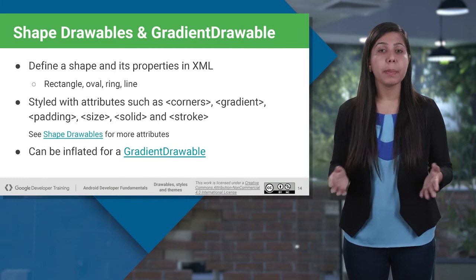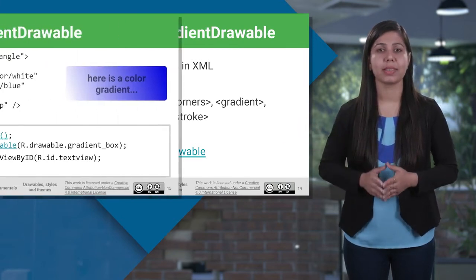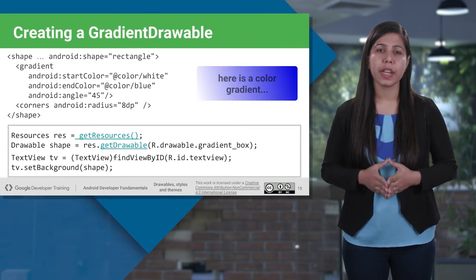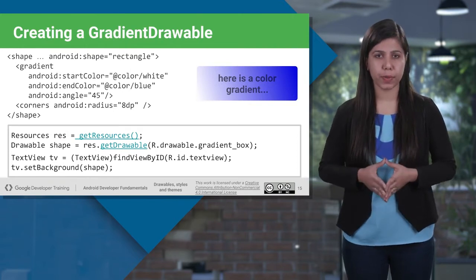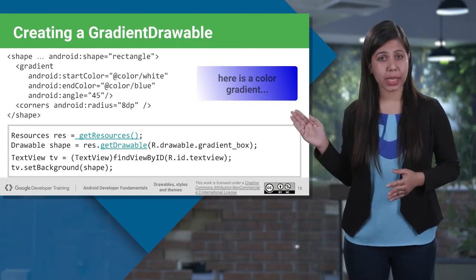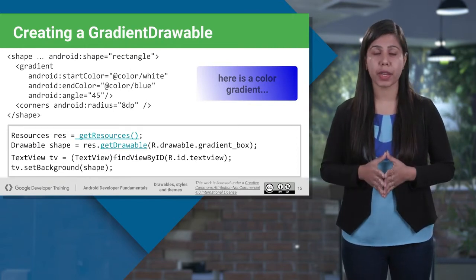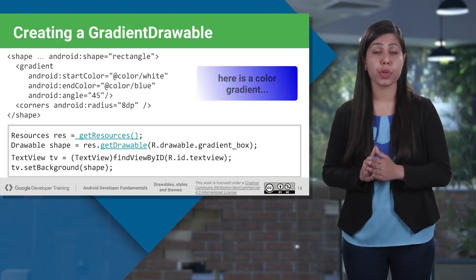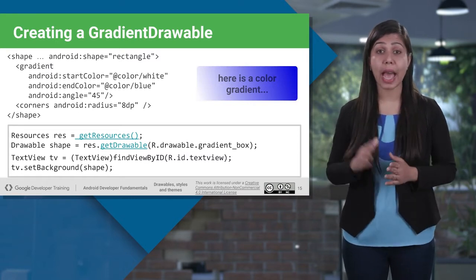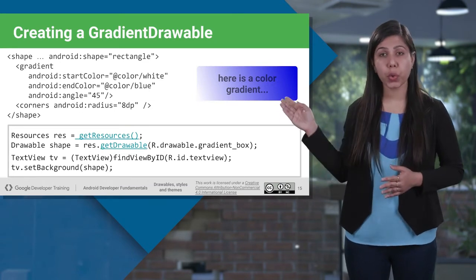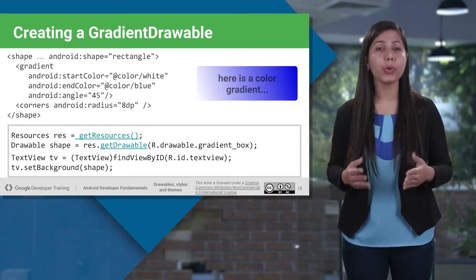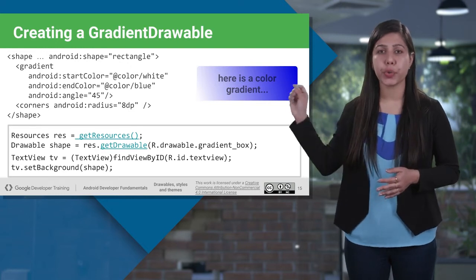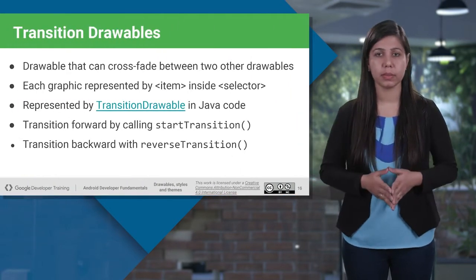A drawable can be inflated for GradientDrawable. In this example, we are creating a GradientDrawable for a TextView. We are defining a rectangular shape and setting attributes for gradients and corners. The Java code shows us how to get the resource reference by R.drawable.filename.xml.